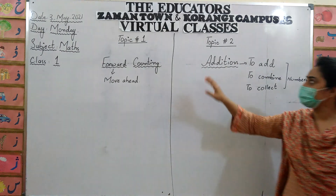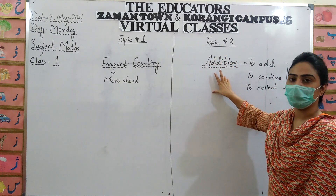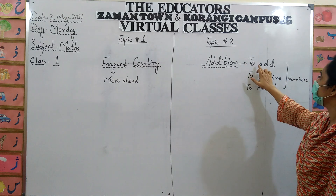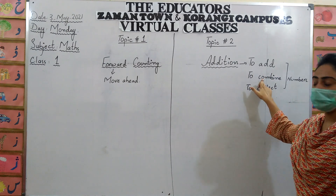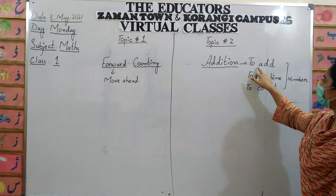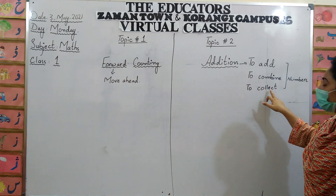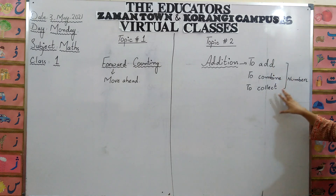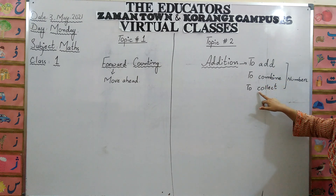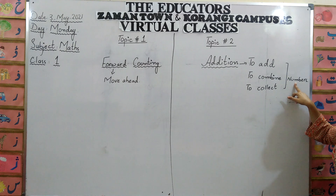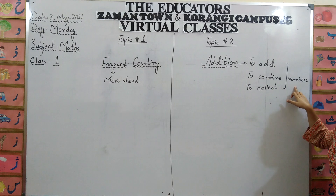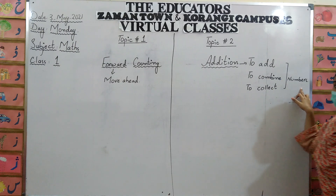Topic number two: addition. What is the meaning of addition? Addition means to add, to combine, and to collect. Addition means the collection of numbers, the addition of numbers, and the combination of numbers.